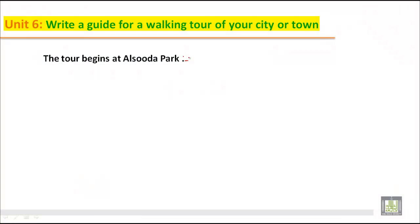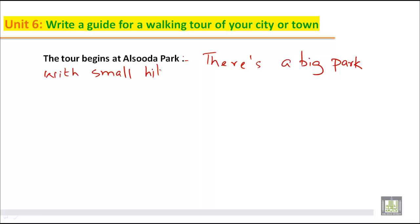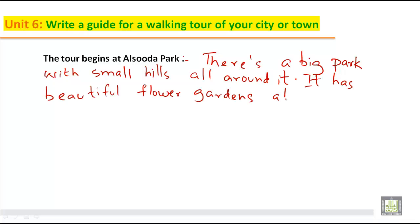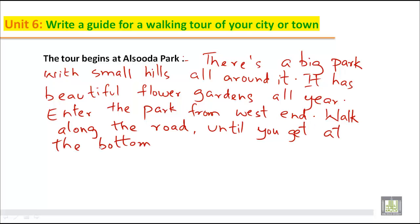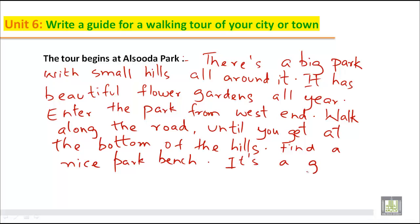You have to give ideas to the tourist. We can write: There is a big park with small hills all around it. It has beautiful flower gardens all year. Enter the park from the west end, walk along the road until you get to the bottom of the hills. Find a nice park bench — it's a good place to sit and watch.